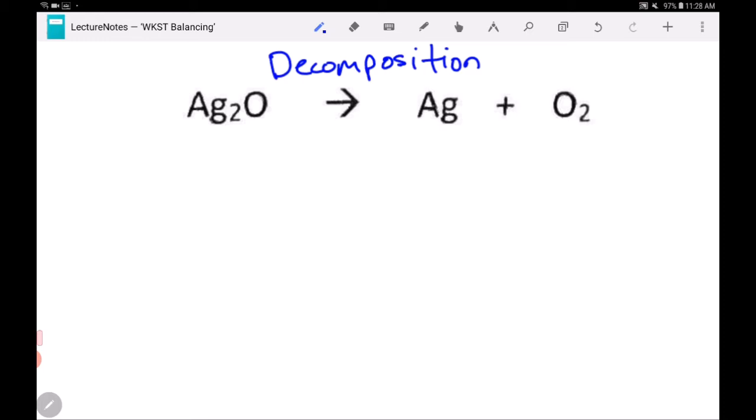In a synthesis reaction, we had two reactants and one product. In this decomposition reaction, we have one reactant and two products. So if we have more products than we had reactants, that's decomposition. Decomposition is one thing breaking down into many things.